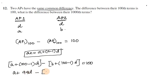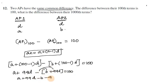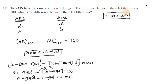Taking the difference of the 100th terms: (A + 99D) minus (B + 99D) equals 100. The 99D terms cancel out, so A minus B equals 100.